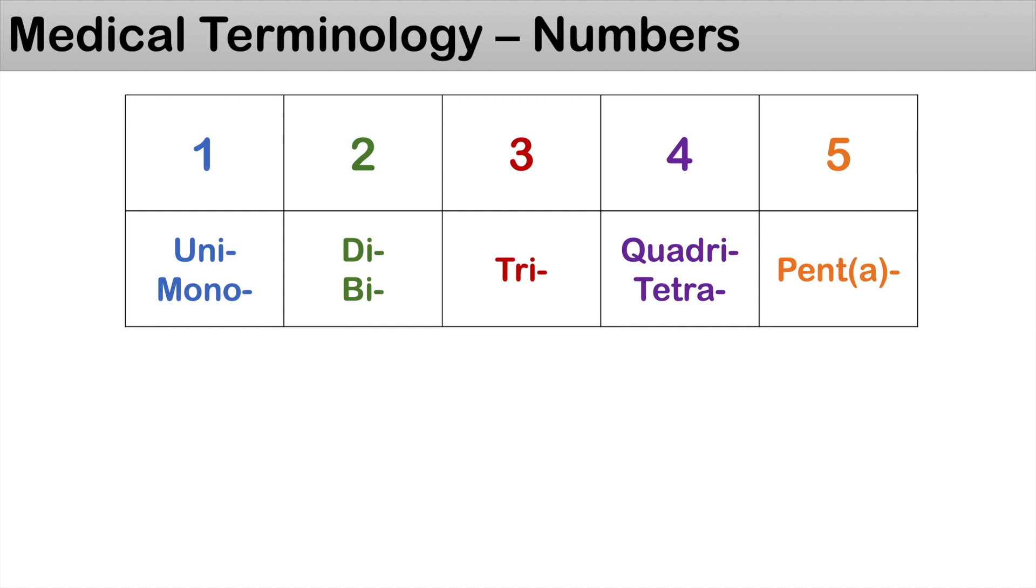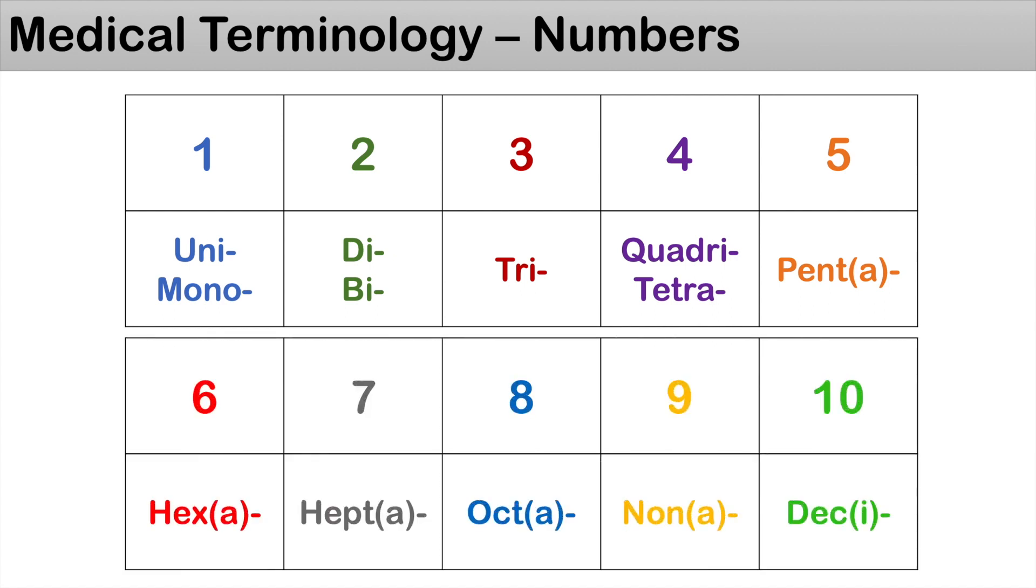For the number five, it's denoted by the prefix pent or penta, so you can think of pentagon. For number six through ten, six is denoted by hex or hexa, so you can think of hexagon.